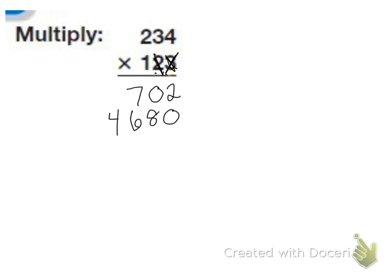I cross off the tens place. And this time I have two X's. So I'm going to put two zeros here because I'm multiplying by the hundreds place. And I know when I multiply any number by 100, I always have two zeros at the end. I have two X's, so I have to have two zeros.